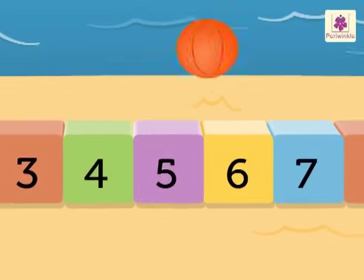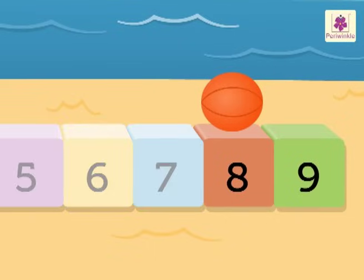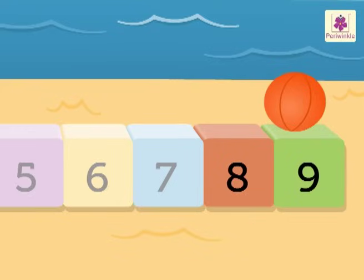Where is the ball now? It is on number 8. Which number will you get when you count forward one number? Number 9. Thus 9 comes after 8.